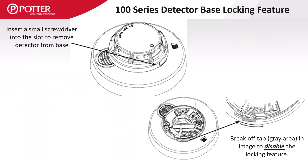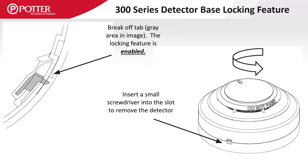On the 100 series bases, there is a tab that needs to be broken off when disabling the locking feature of the detector head. On the 300 series, the locking feature works exactly the opposite — to enable the locking feature, break the tab as shown in the illustration.